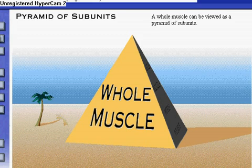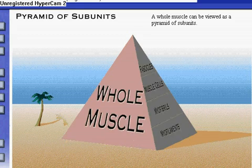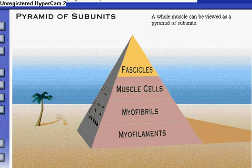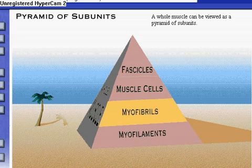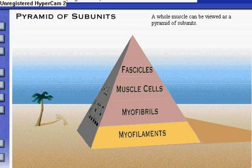In summary, a whole muscle can be viewed symbolically as a pyramid of subunits. A whole muscle is composed of many smaller units called fascicles. Each fascicle, in turn, contains numerous muscle cells, also called muscle fibers. Each cell is composed of many additional subunits called myofibrils. The smallest and most numerous of all subunits are the myofilaments, which are found within the myofibrils.